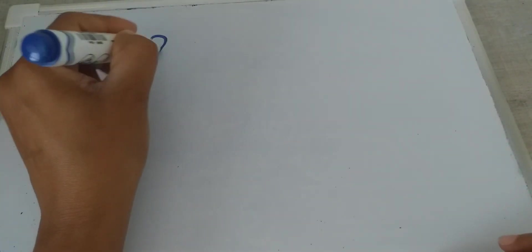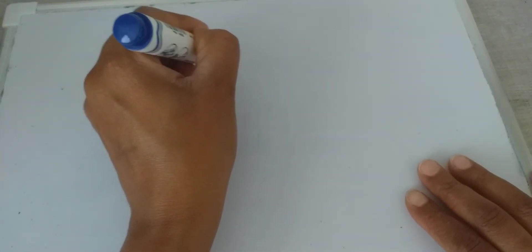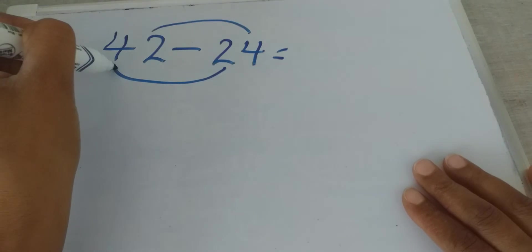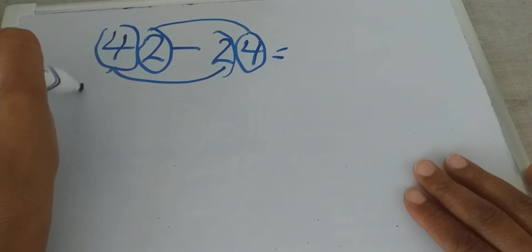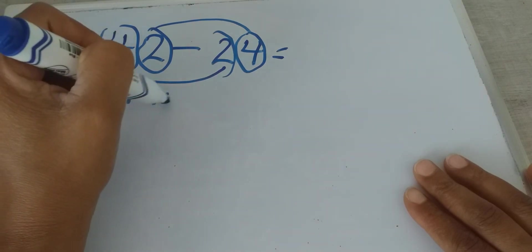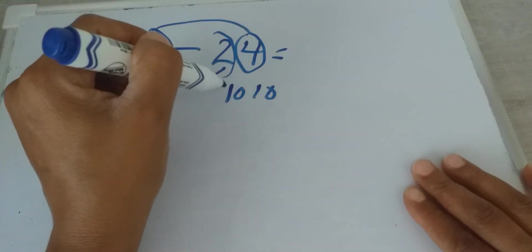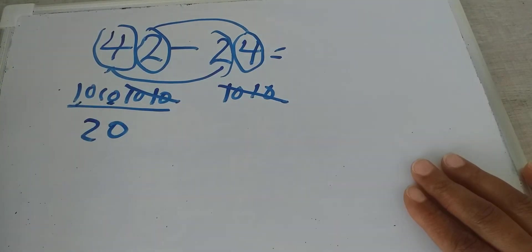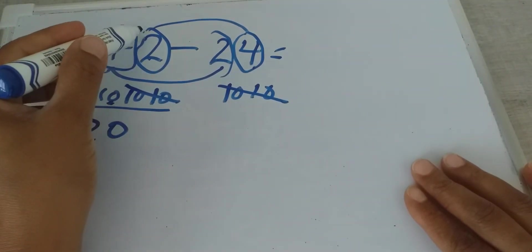Another question: 42 minus 24 — what is the answer? One house, tens house. From the tens: 4 tens, which means 4 times 10. We remove 2 tens — how many tens are left? 2 tens. 2 tens means 10 plus 10 equals 20.